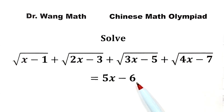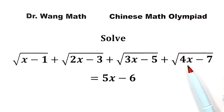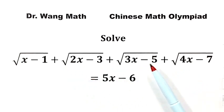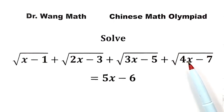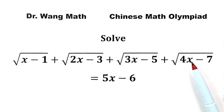For this type of question, the usual approach is to eliminate the square roots. However, since here we have a sum of four square roots, we might end up squaring both sides of the equation multiple times, which can get complicated. So instead, we use a special method to solve this equation.